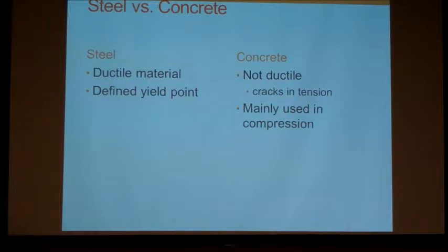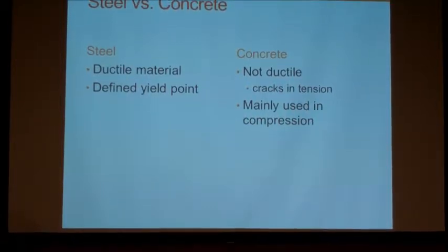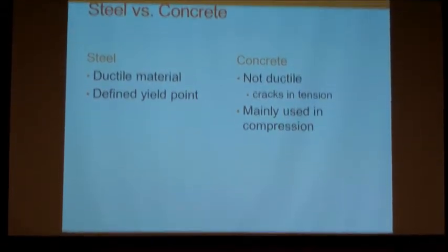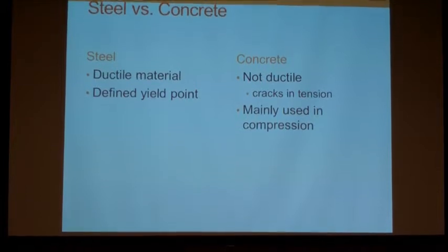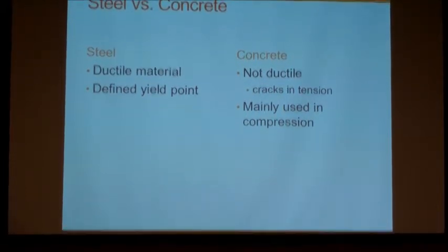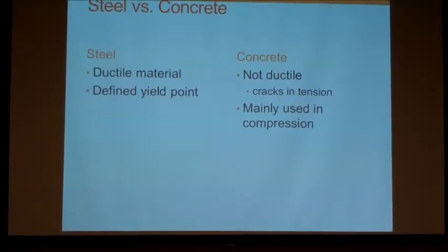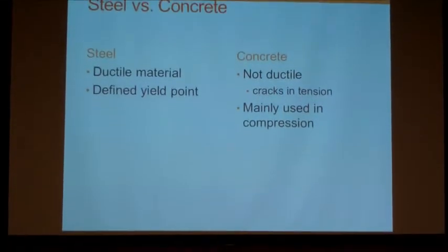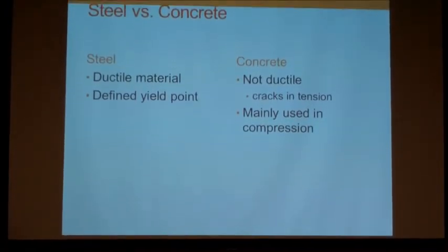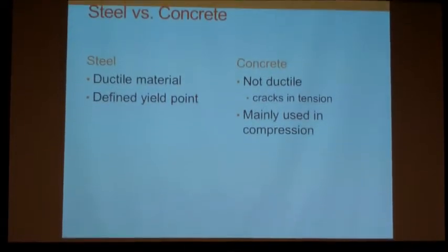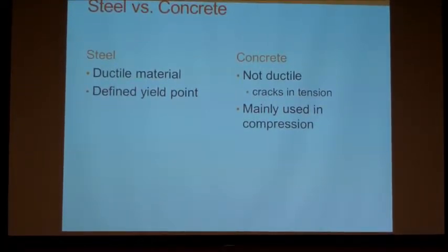So just kind of for review, a ductile material is when a material stretches under tensile stress. So steel is obviously a very ductile material, and it has a defined yield point, whereas concrete is not very ductile. So that's why we put steel in our composite structures, so that therefore makes the concrete stronger, and it can actually work a little bit better in tension because we all know it cracks in tension, and that's why concrete is mainly using compression. It's going to be stronger in compression. Once again, things that you should already know.